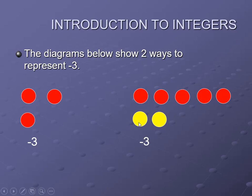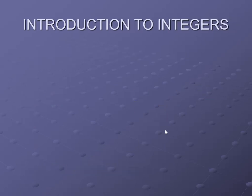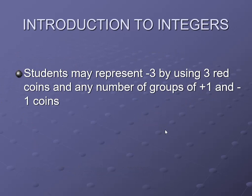One negative and one positive coin together make 0 — they get cancelled. So when these pairs cancel out, the remaining coins show minus 3. Now try to represent minus 3 in two more ways in your notebook, using three red coins and any number of groups of plus 1 and minus 1 coins.